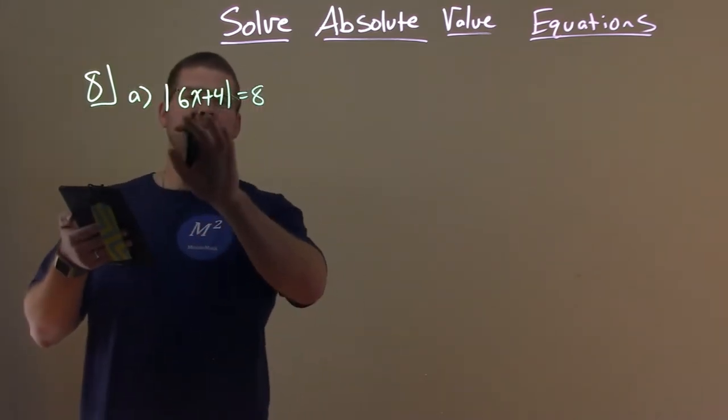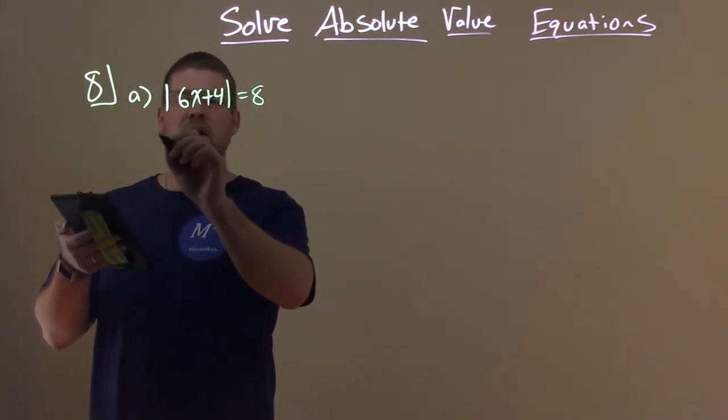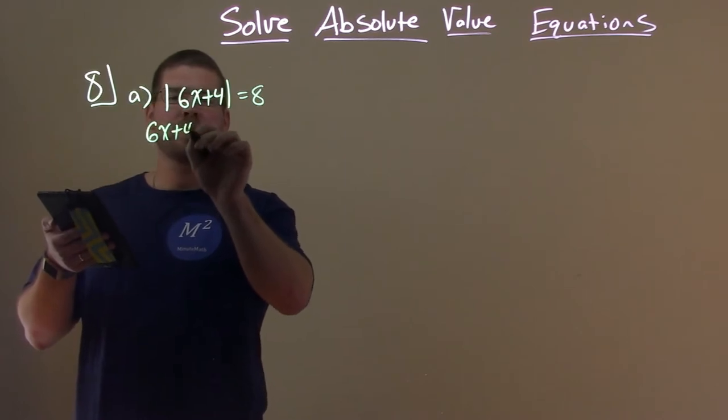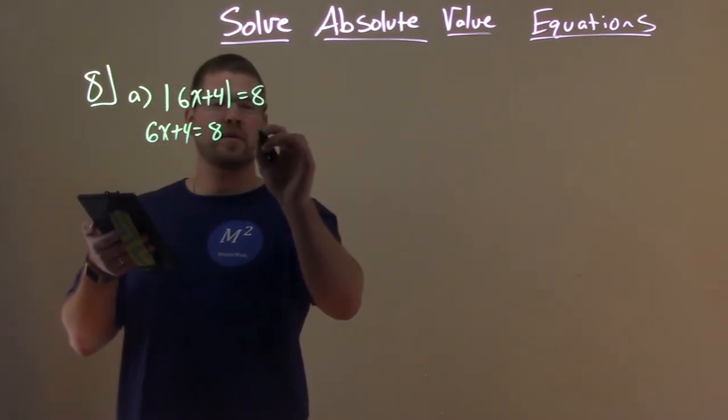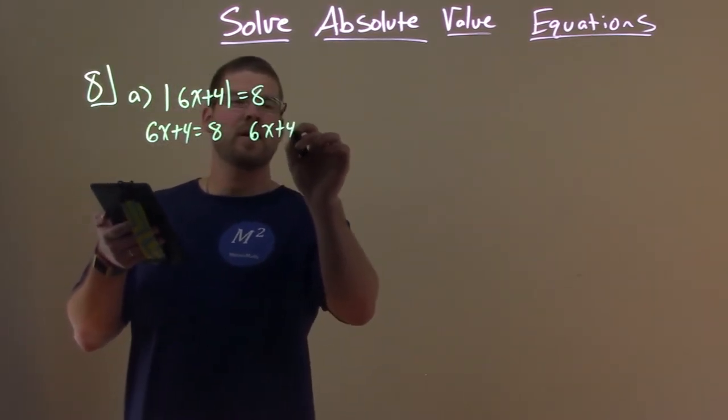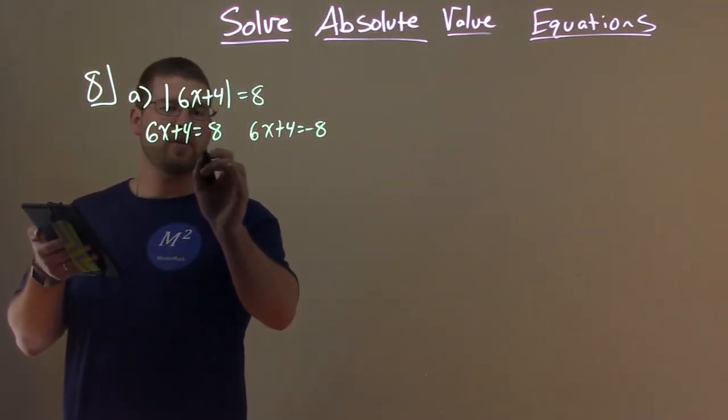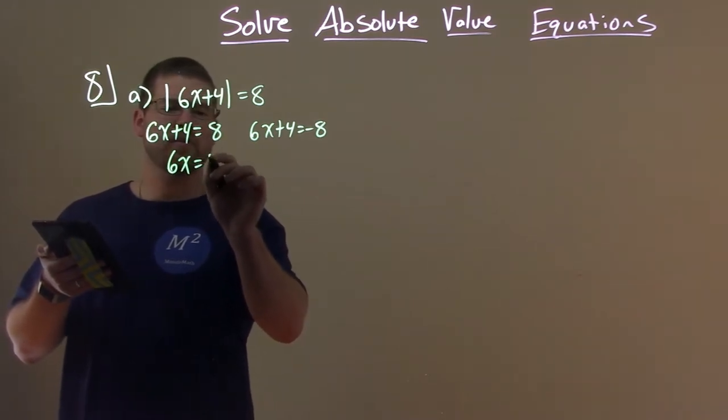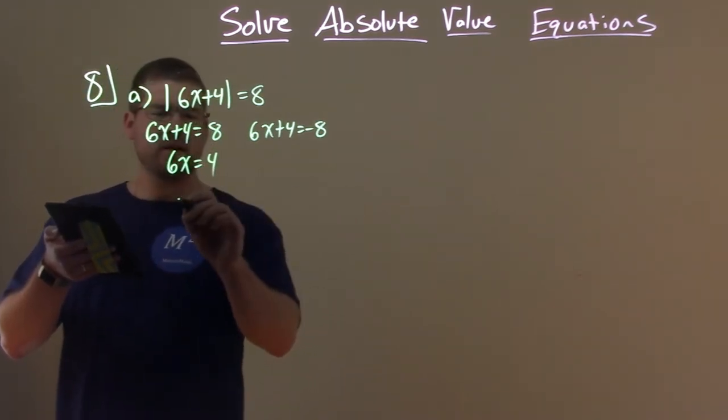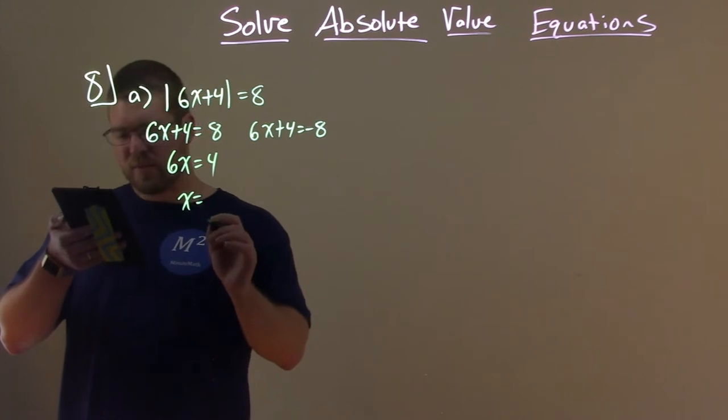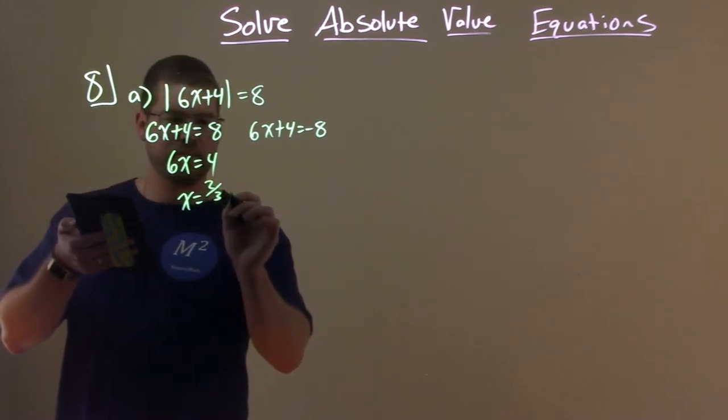So we're going to set each one of these. Since we have absolute value of 6x plus 4, we're going to set 6x plus 4 equal to a positive 8, and 6x plus 4 equal to a negative 8. And we need to solve each one individually. Subtract 4 from both sides. 6x equals 4. Divide both sides by 6, and x equals two-thirds.